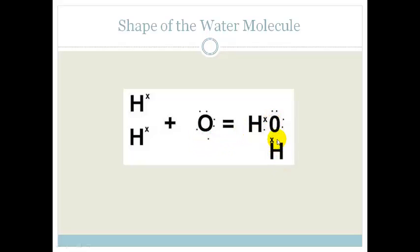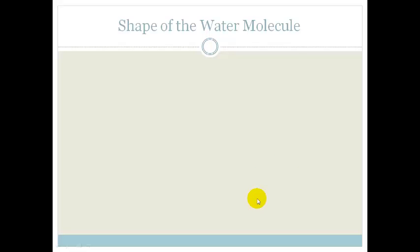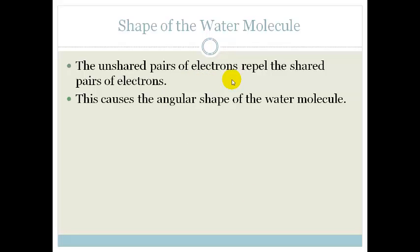So when it forms water, we end up with two pairs of shared electrons. That's important because the unshared pairs of electrons repel the shared pairs of electrons, and that's what causes the shape of the water molecule. These unshared pairs actually repel the shared pairs, and you end up with that beautiful angular shape of the water molecule.